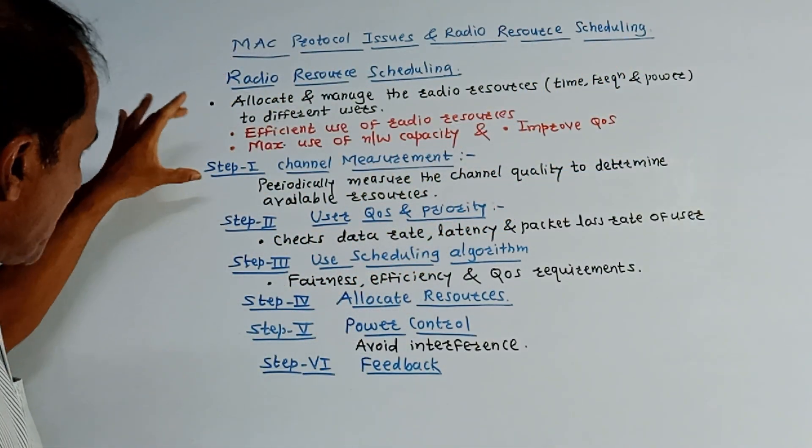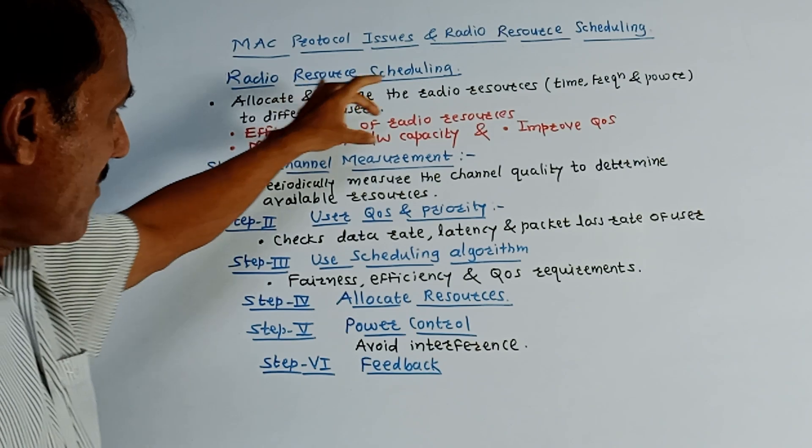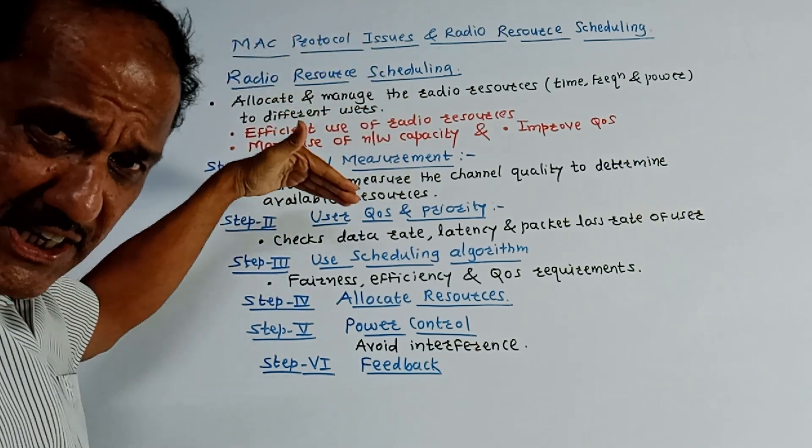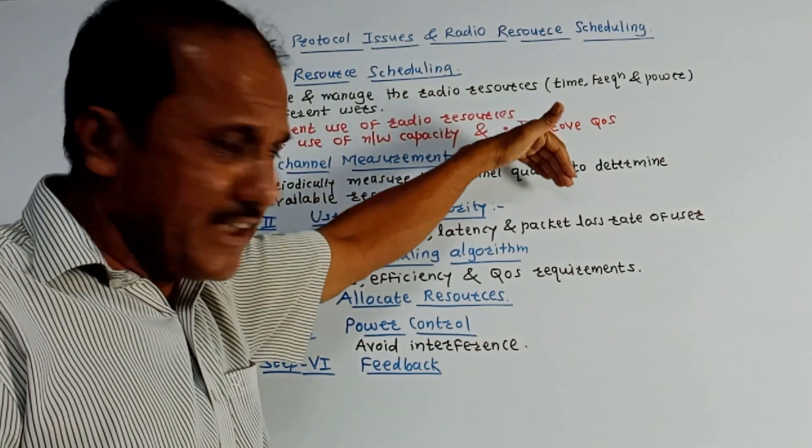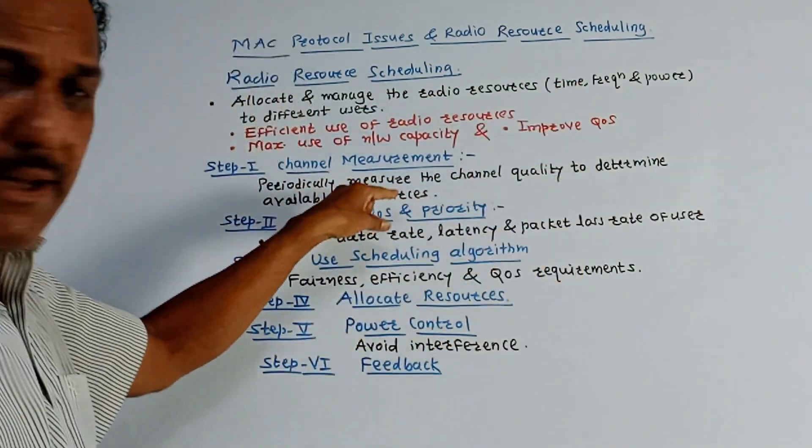Now what are the different steps? Step 1: channel measurement. As the name indicates, periodically it measures the channel quality to determine the available resources.